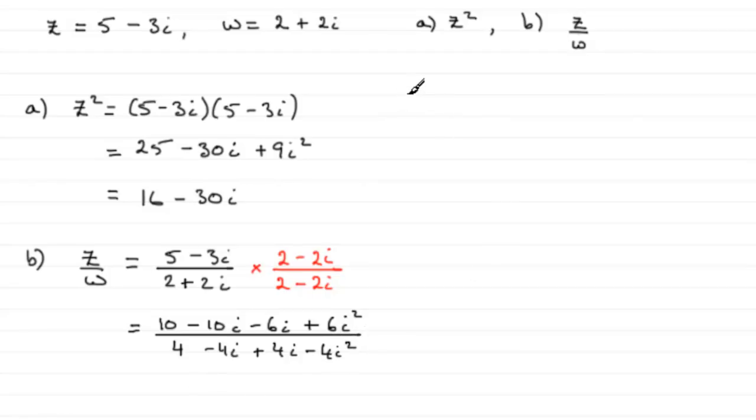So we've just come down here. Z over w then, if we can carry on, gives us 10 minus 6 gives us 4, and then we've got minus 10i minus another 6i is minus 16i. And that's all divided by 4 plus 4 here which is 8, and the i's cancel, minus 4i plus 4i is 0.